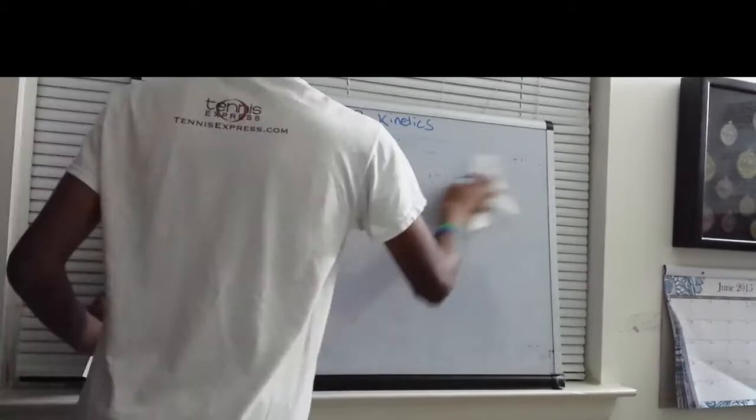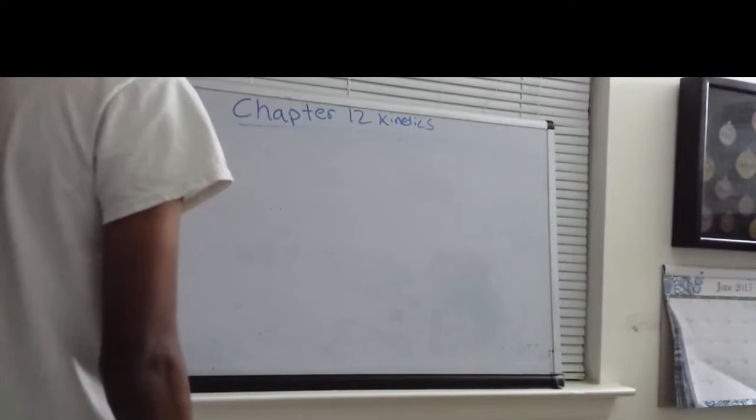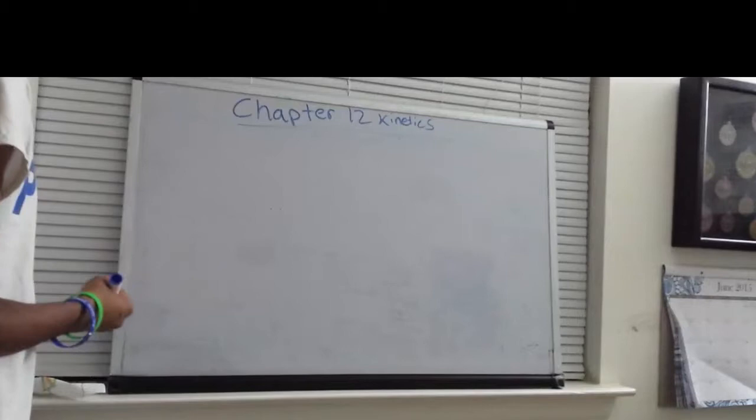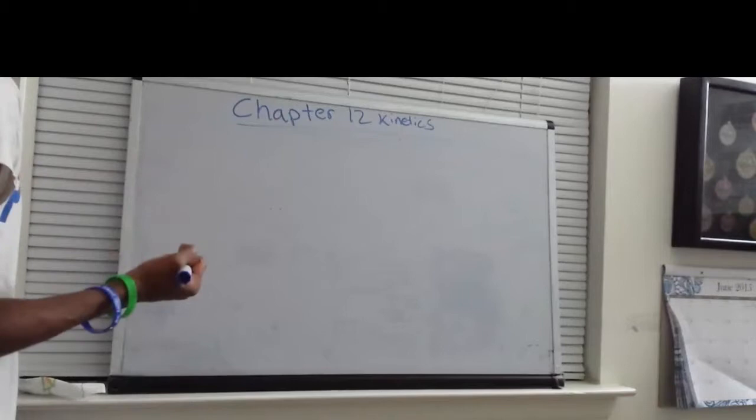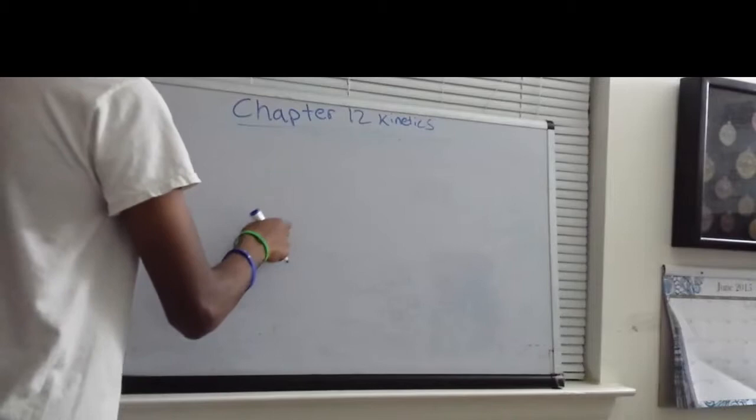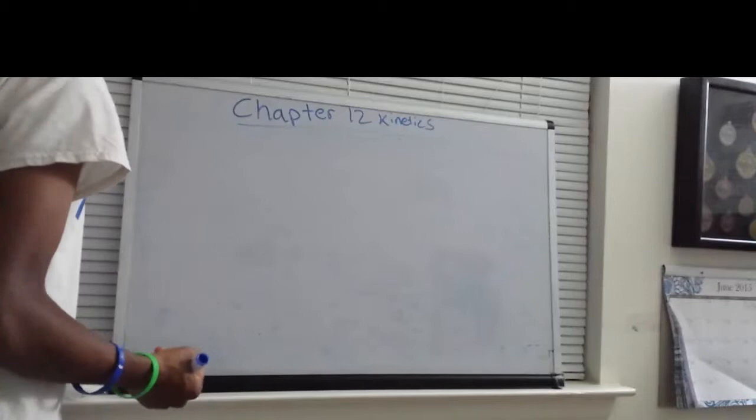Now let's go over the integrated rate law. There are three common types: the zero-order integrated rate law, the first-order integrated rate law, and the second-order integrated rate law. These three are the only ones covered in the AP curriculum and the only ones that will appear on the AP test.